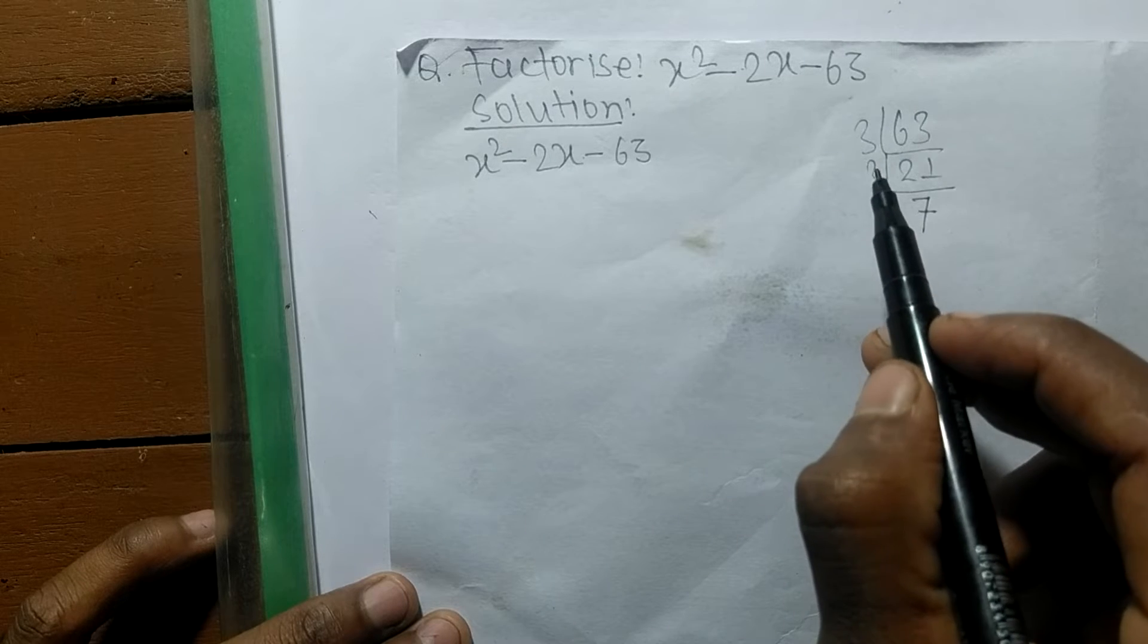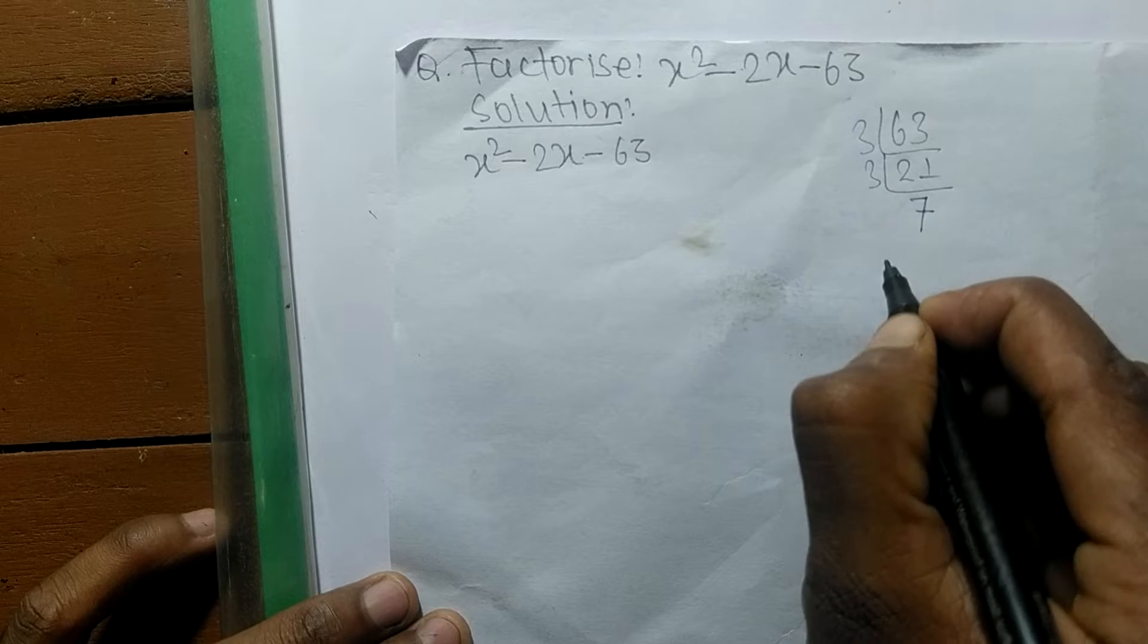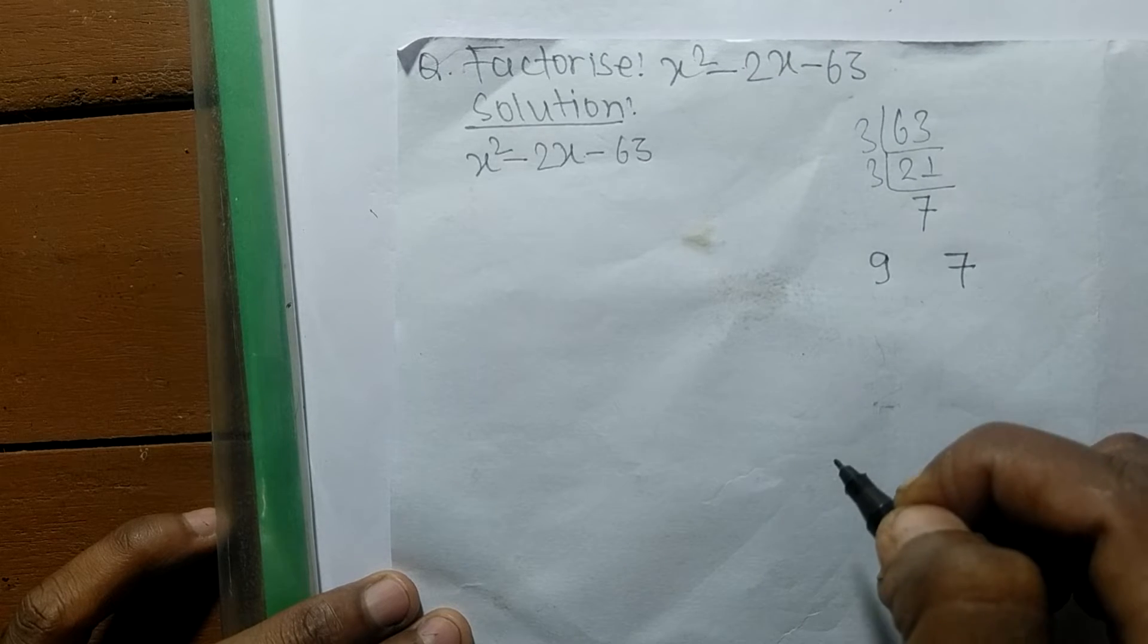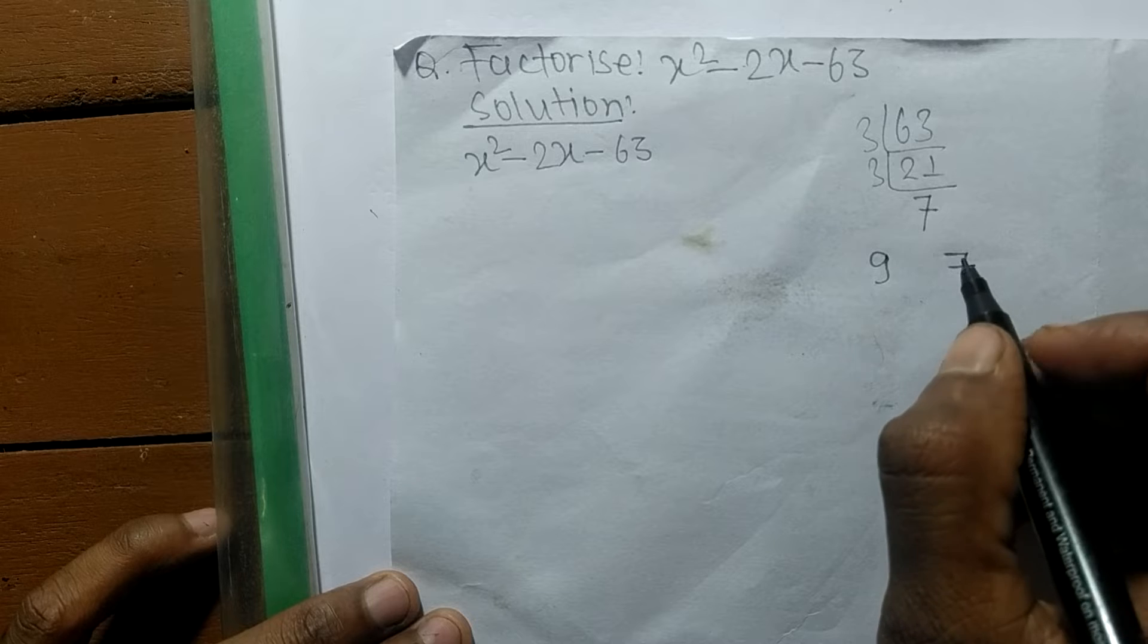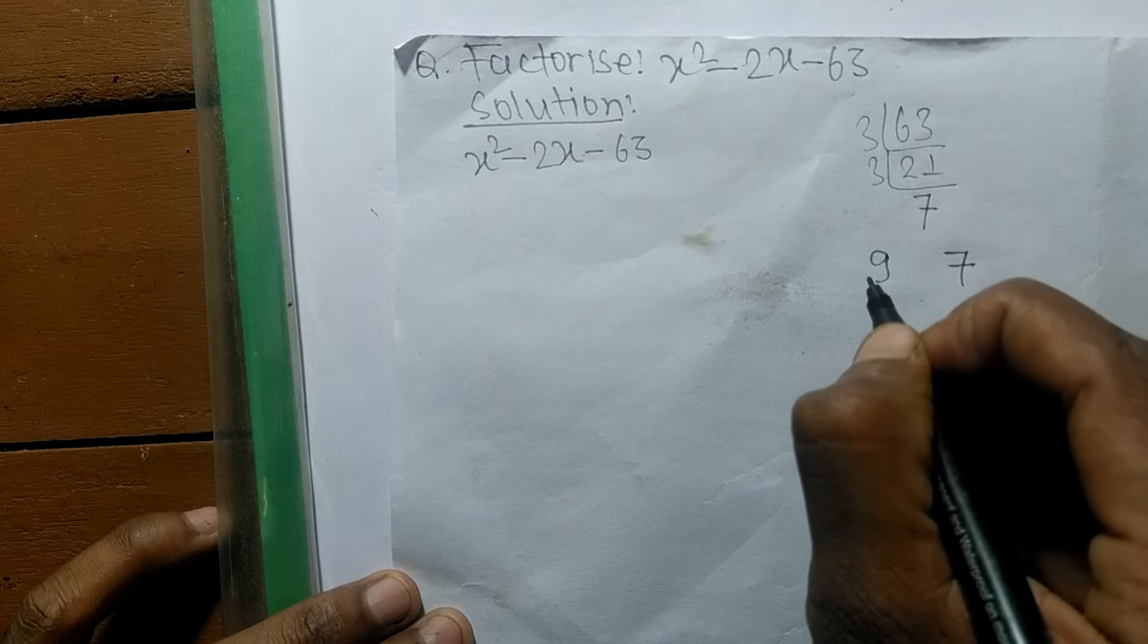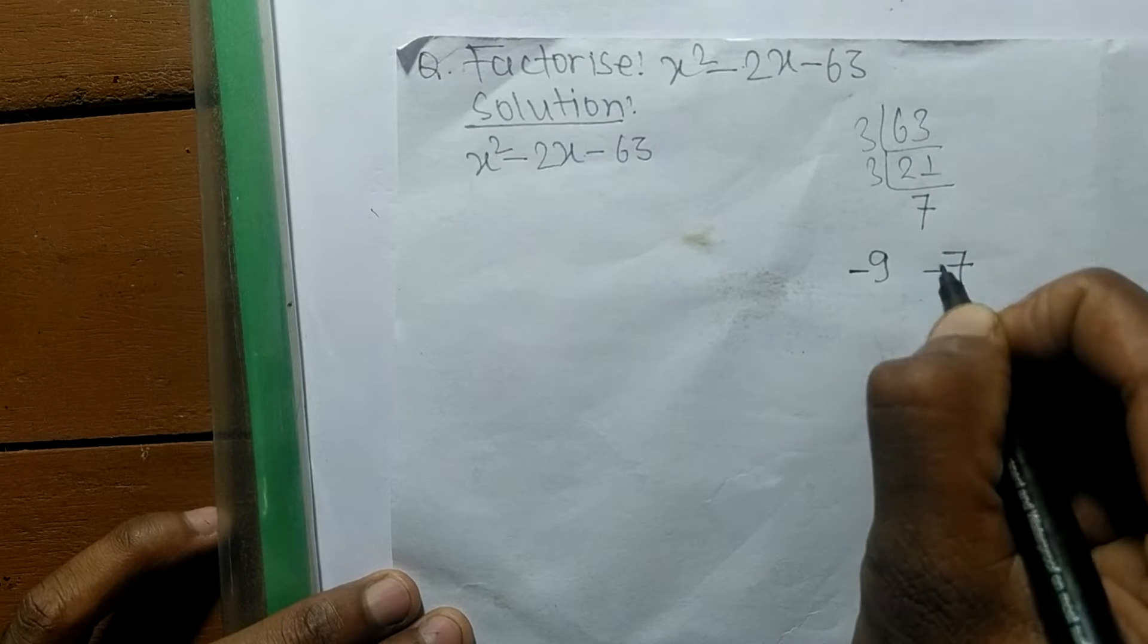When you multiply first numbers 3 times 3 means 9, like as the remaining is 7, so 9 plus 7 means we got 16. But we have to take here minus 2, so when you put here minus and here plus, so minus 9 plus 7 means it is equal to minus 2.